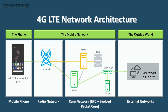eNodeB is connected to the Mobility Management Entity (MME), which takes care of all the signaling and exists in the control plane. The MME is connected to the Home Subscriber Server (HSS), which is the equivalent of the HLR. The eNodeB also connects to the Serving Gateway (SGW), which is the equivalent of the SGSN in 3G.